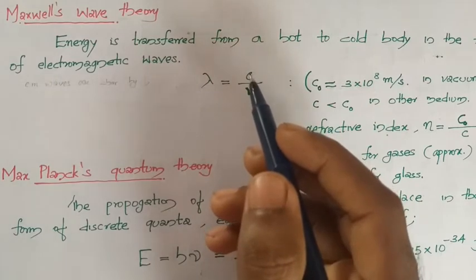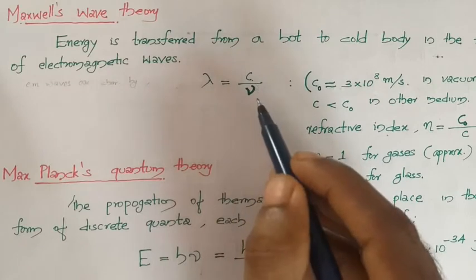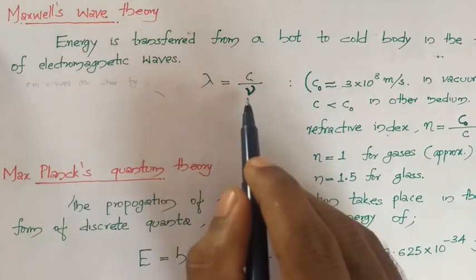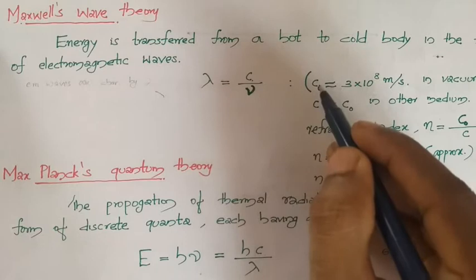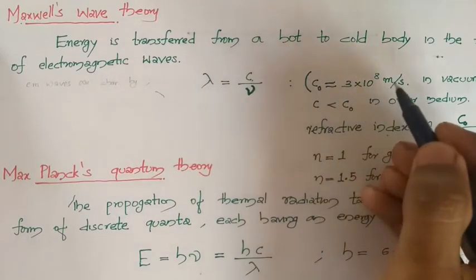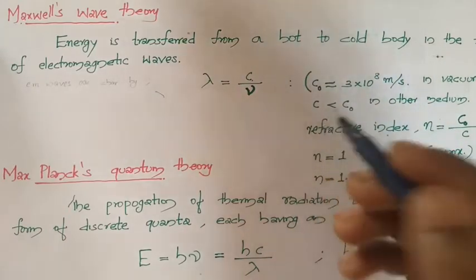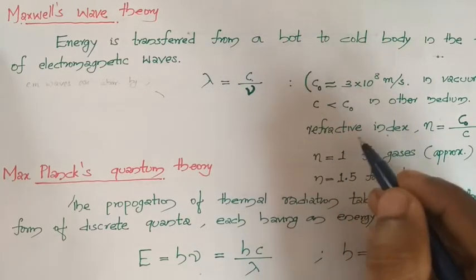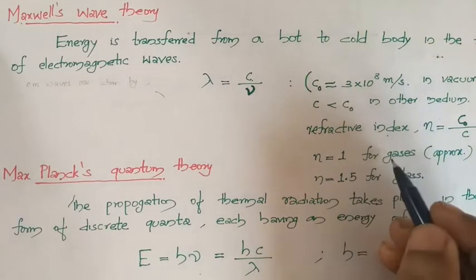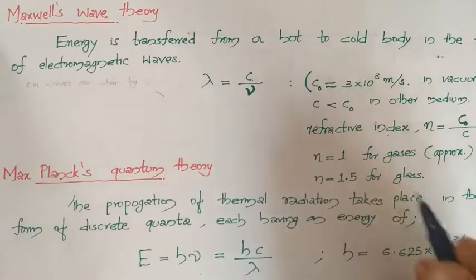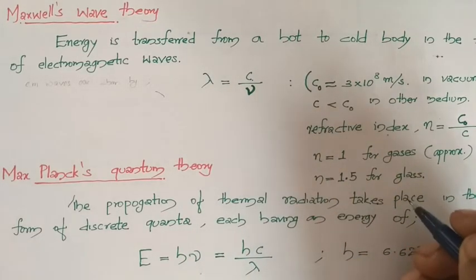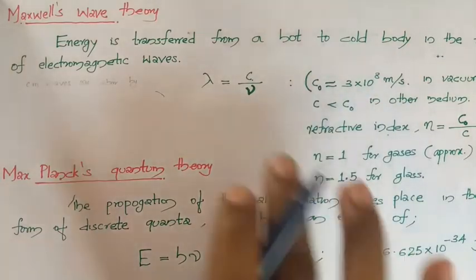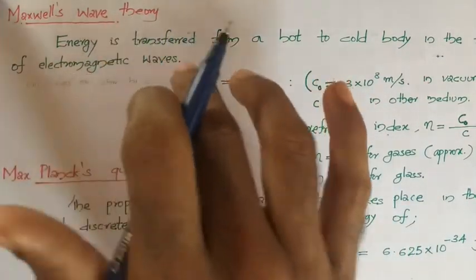These are related by λ = c/ν, where λ is wavelength, c is the velocity of light (an electromagnetic wave), and ν is frequency. In a vacuum, the velocity is c₀, which is 3×10⁵ meters per second. In any other medium, the velocity of light is reduced, and this reduction is given by the refractive index, defined as c₀/c. For gases the refractive index is approximately 1, and for glass it is 1.5.